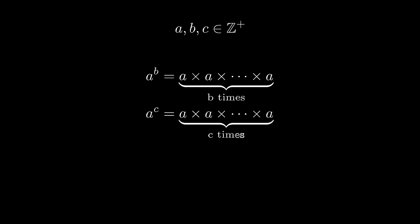Let's say we have three positive integers a, b, and c, and with them we can derive the arithmetic laws of exponentiation. a to the power of b means a multiply itself b times, and similarly a to the power of c means a multiply itself c times.